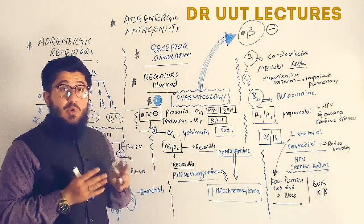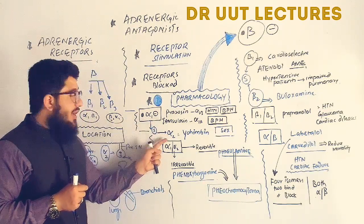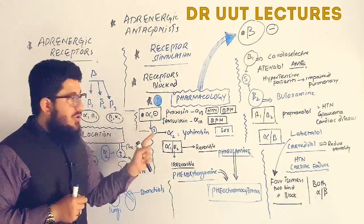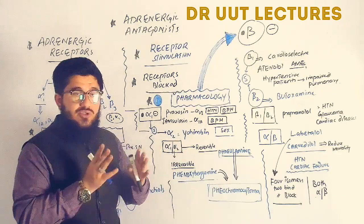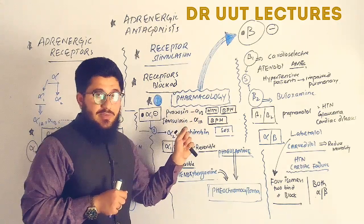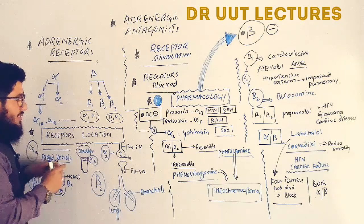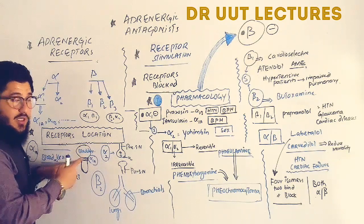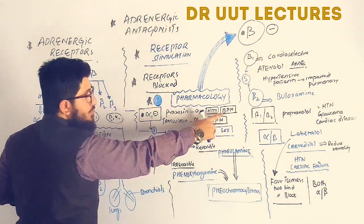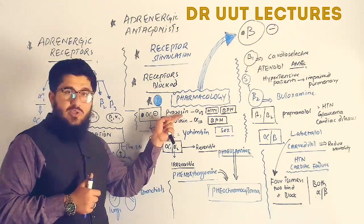In pharmacology, we classify adrenergic blockers as alpha-1 selective, alpha-2 selective, alpha-1/alpha-2 non-selective, and beta blockers. Alpha-1 selective examples include prazosin, terazosin, and similar drugs ending in '-sin.' These drugs act primarily on alpha-1b receptors and also on alpha-1a, so they treat both hypertension and benign prostatic hyperplasia (BPH).